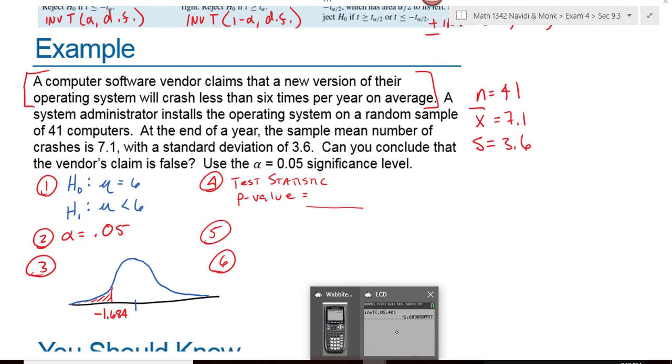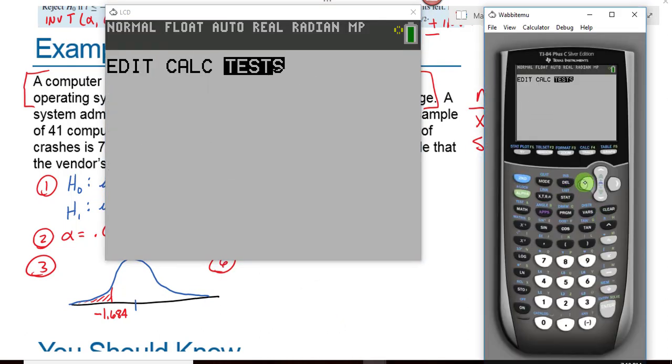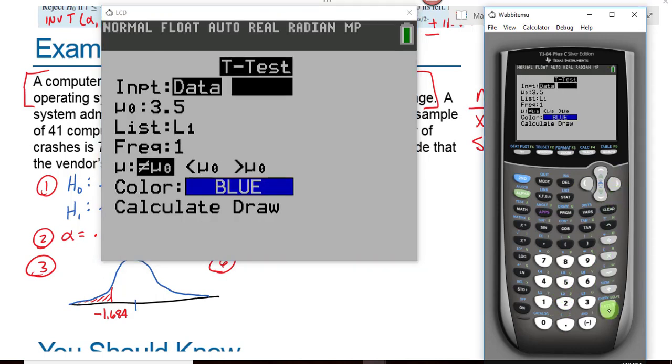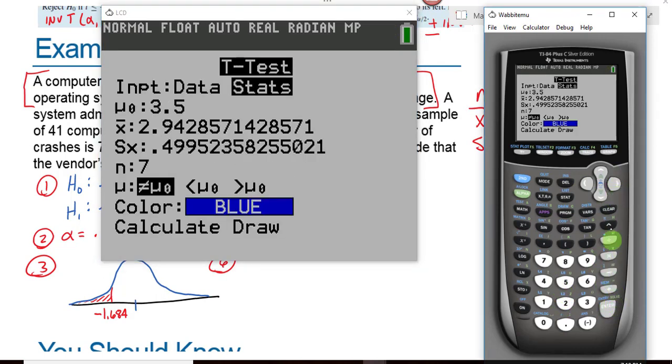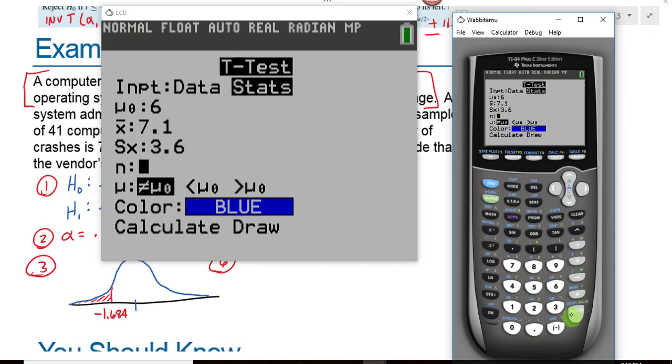Now we have enough information that we can go to our calculator and do the t-test. Stat, test, t-test is number 2. Oh, I don't have raw data now. I have to use my summary statistics. So I changed that on my calculator. The value from the null hypothesis is 6. X bar was 7.1. And what was the standard deviation? 3.6. Our sample size was 41. And this is a left tail test. And we calculate.